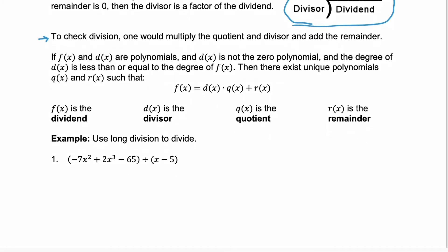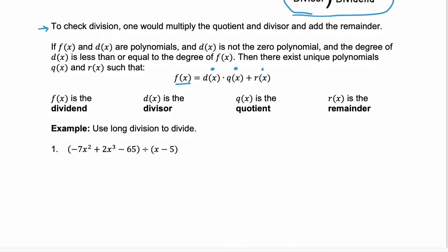Now, if f of x and d of x are polynomials, and d of x is not the zero polynomial, and the degree of d of x is less than or equal to the degree of f of x, then we can rewrite f of x, our dividend, in terms of the divisor times the quotient plus the remainder. Seems a little tricky, but we're going to look at some examples and it should make a little more sense.